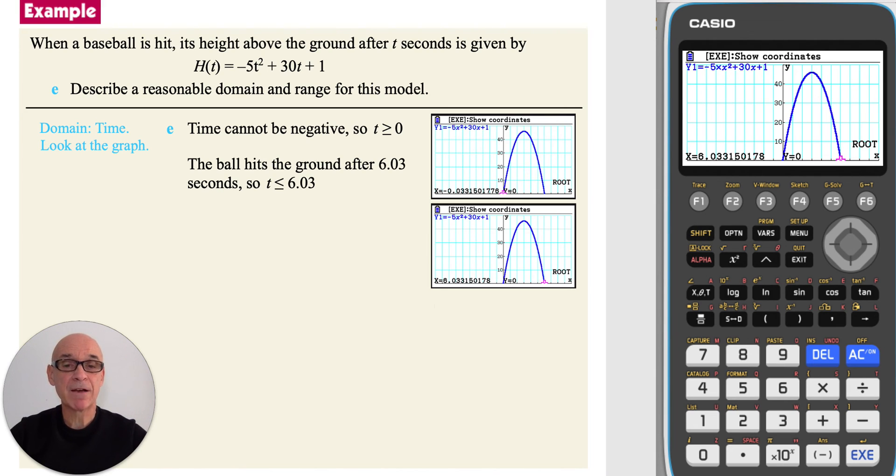And as the ball hits the ground after 6.03 seconds, t will have to be less than or equal to 6.03. So a reasonable domain is t is greater than or equal to 0, but less than or equal to 6.03.